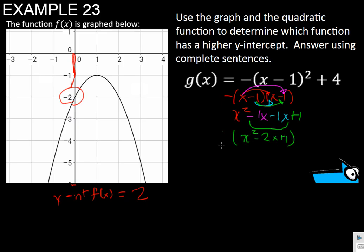But then we've got to remember that we have negative outside. So now we're going to distribute that through. Negative times x squared is negative x squared. Negative times negative 2 is positive 2x. And negative times 1 is negative 1. Okay, now I can bring down the plus 4.